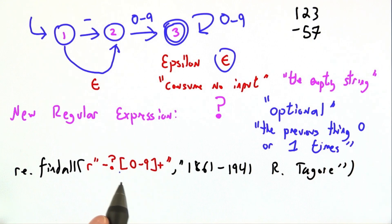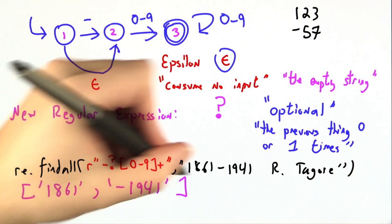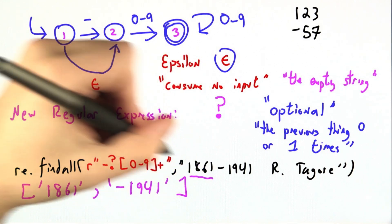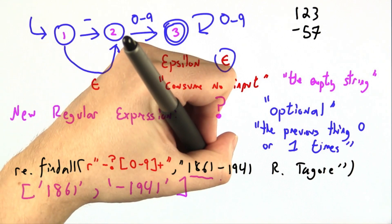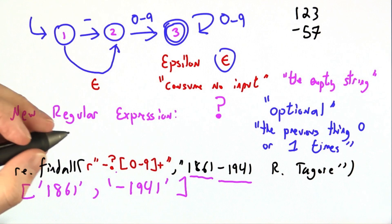And the string we're looking for this needle in is 1861 to 1941 R Tagore. And on this particular input we will find two substrings that match. 1861 matches without the leading negative sign. And hyphen 1941 matches with the leading negative sign.